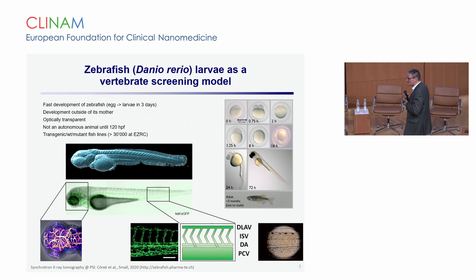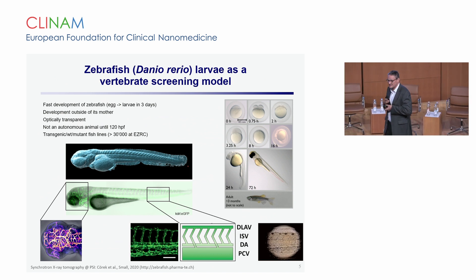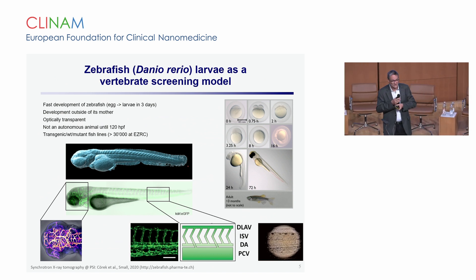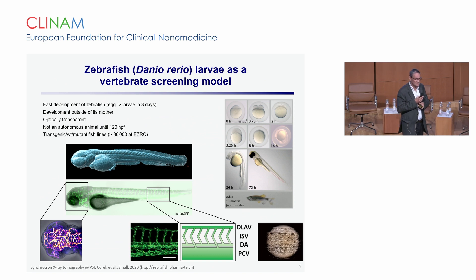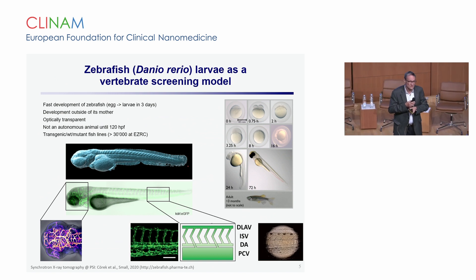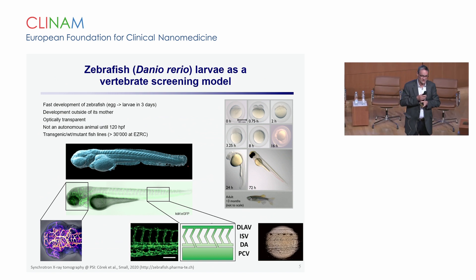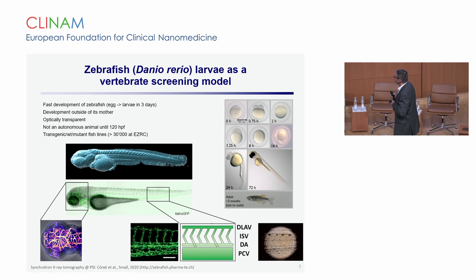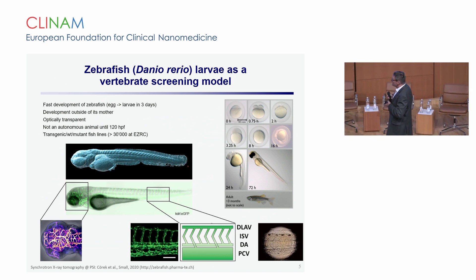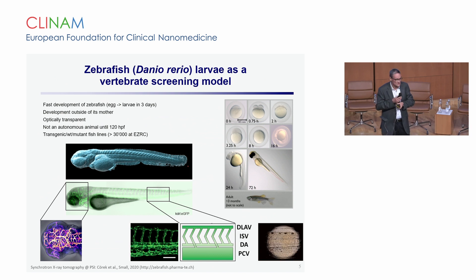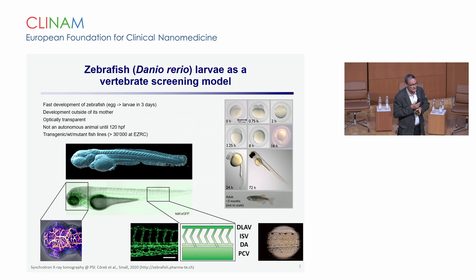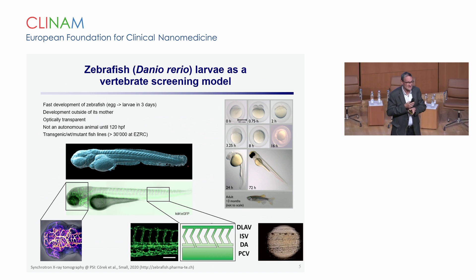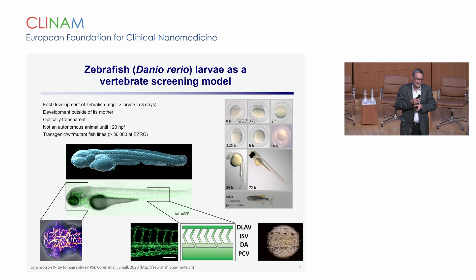They are frequently used in developmental biology and toxicology as test animals. For these reasons, there are tens of thousands of different transgenic fish strains or mutant fish lines available for research. From a regulatory point of view, these small organisms have the regulatory status of a cell culture model because they are not yet considered to be autonomous animals.